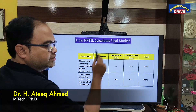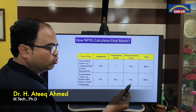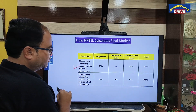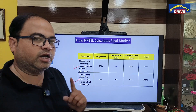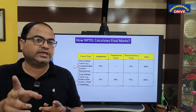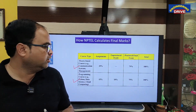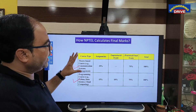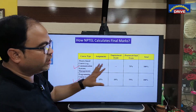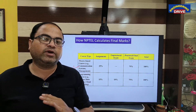Now, when you have selected any NPTEL course, it will generally fall into two categories: one is a theory-based course and the other is a programming course. This is a very important point. When you select any type of course in NPTEL, it falls into these two categories — theoretical course or programmatic course. The calculation process for each is different, and I will show both with different examples.